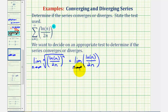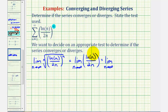Now as n approaches infinity, notice how both the numerator and denominator approach infinity, which is an indeterminate form. So to find this limit, we'll apply L'Hôpital's rule, which means this limit equals the limit as n approaches infinity of the derivative of the numerator divided by the derivative of the denominator.